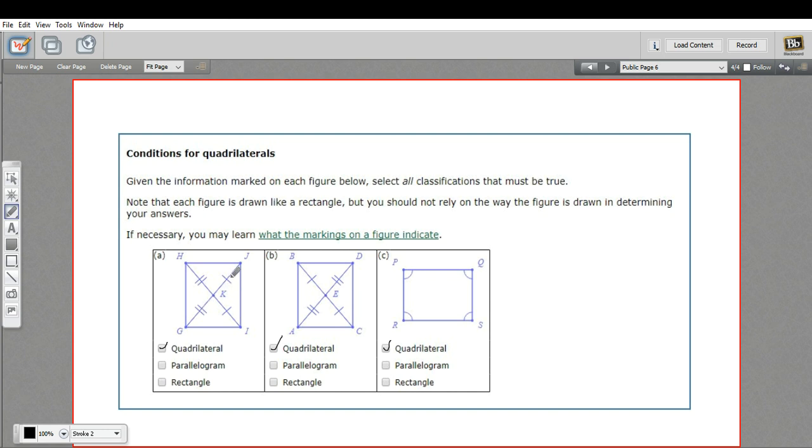In this diagram, we have the markings that show parts from the different diagonals being the same. So this is not the markings you'd see in a parallelogram. So I don't think we can check that, and we certainly can't check rectangle if we can't check parallelogram.